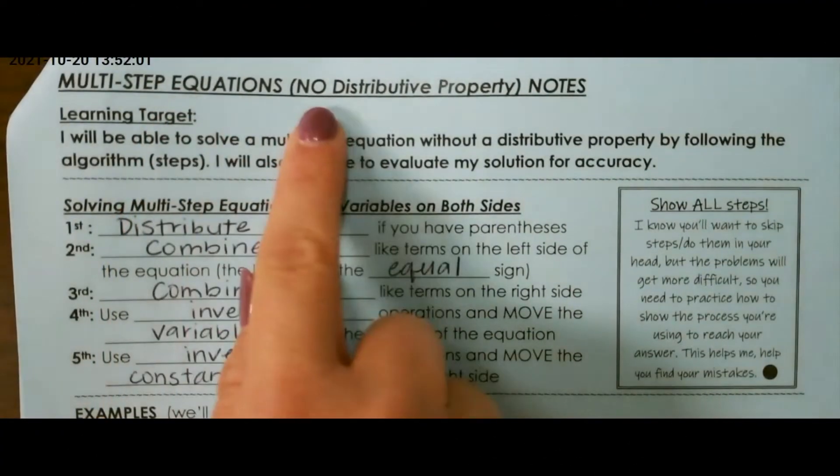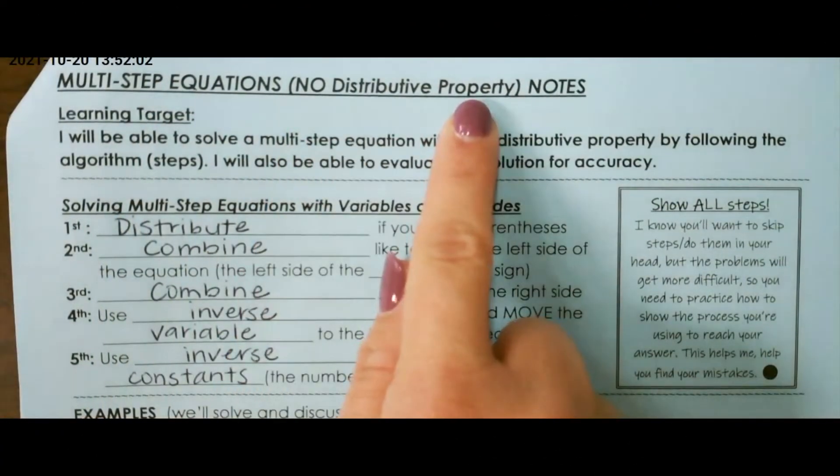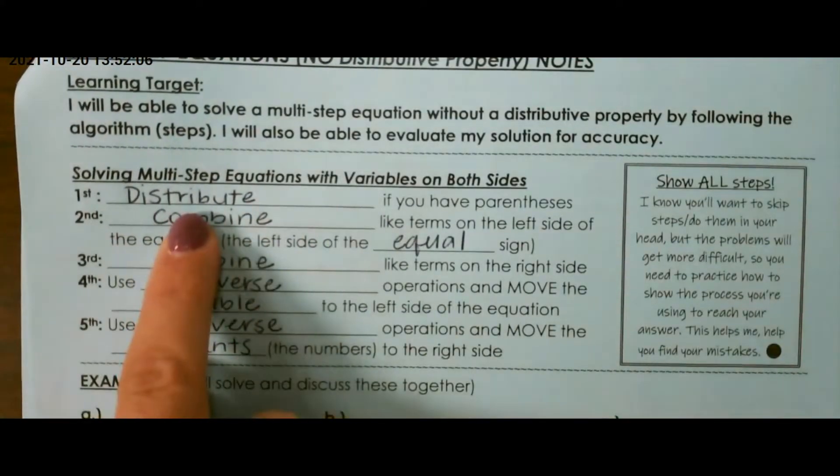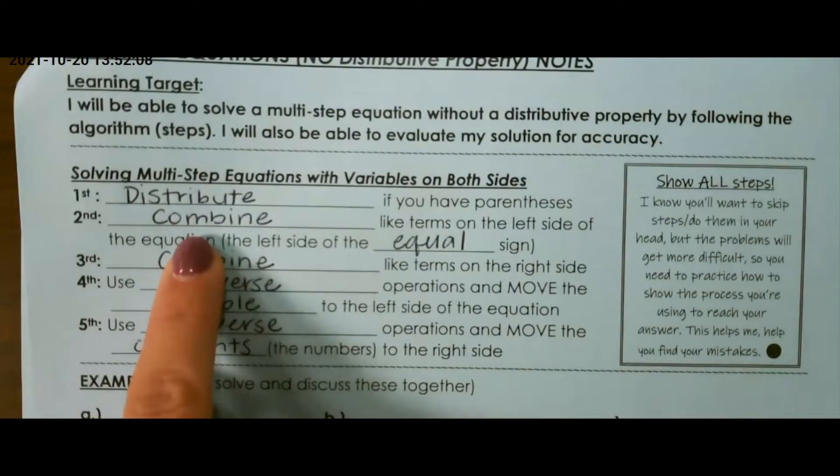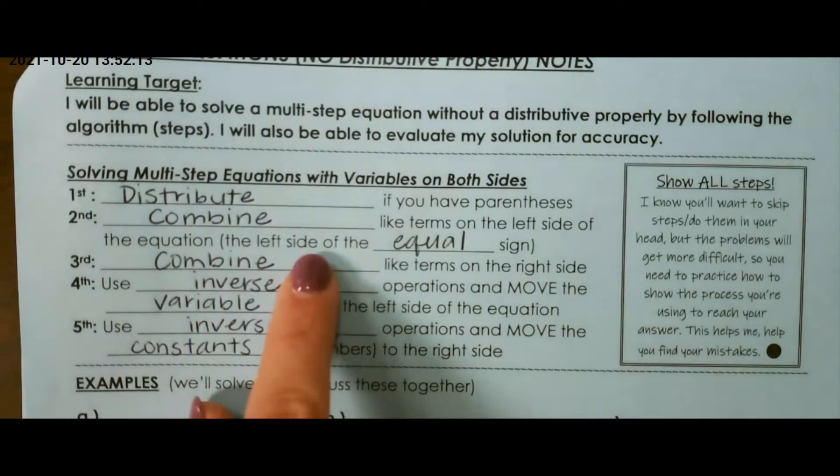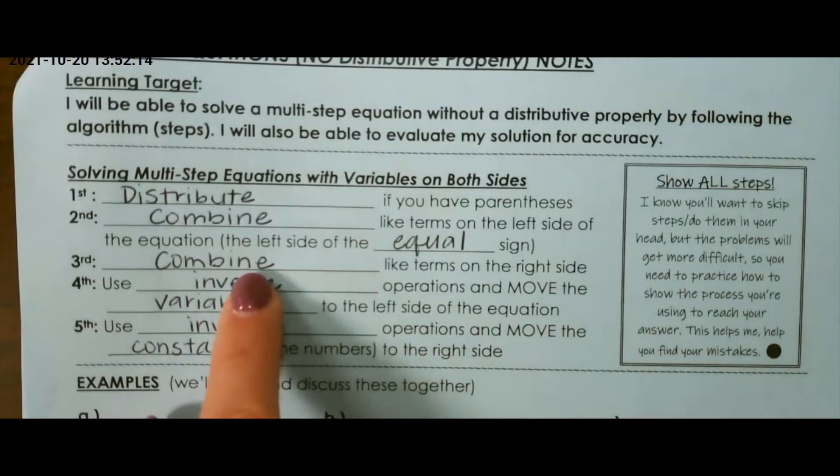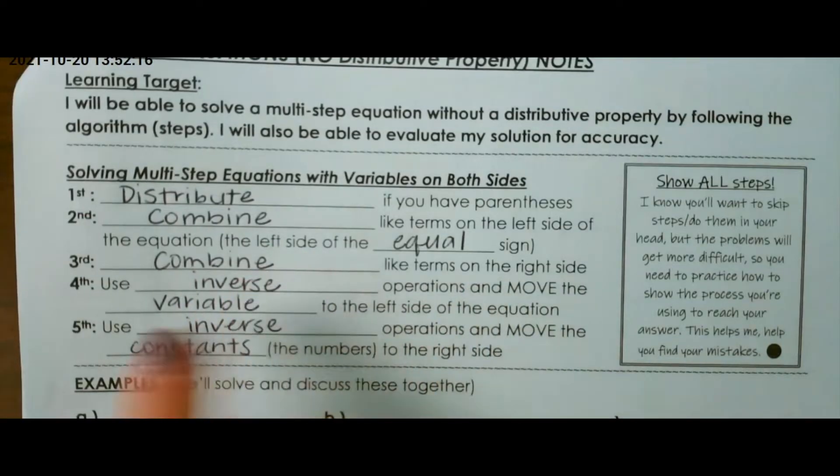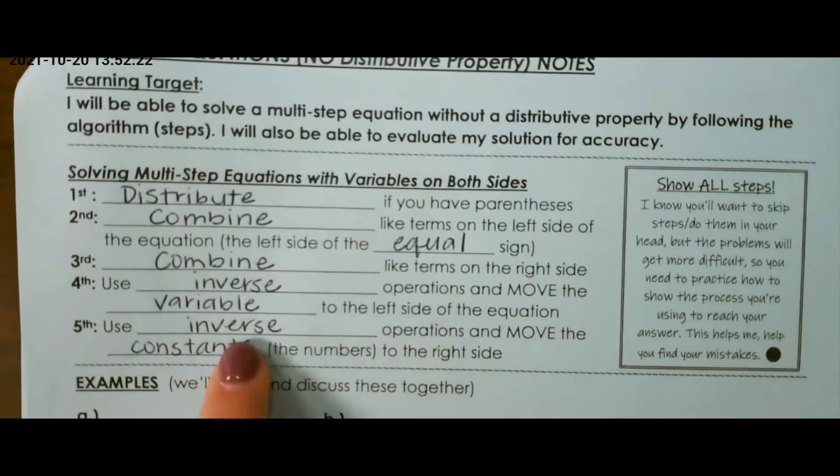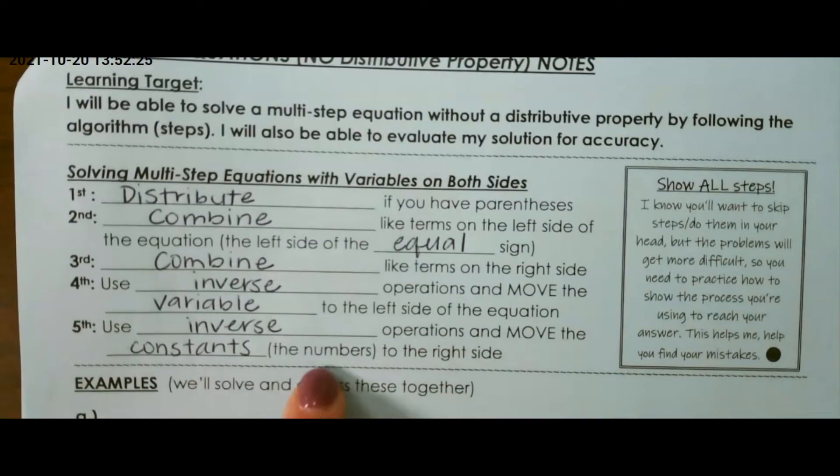Let's talk about multi-step equations with no distributive property first. We can skip over step 1, which says distribute if you have parentheses. Combine like terms on the left side of the equation or the left side of the equal sign, combine like terms on the right side, use inverse operations and move the variable to the left side of the equation, and use inverse operations and move the constants, or the regular numbers, to the right side.